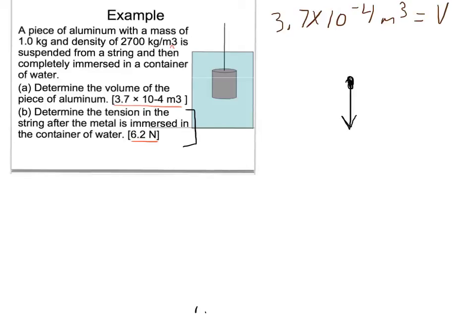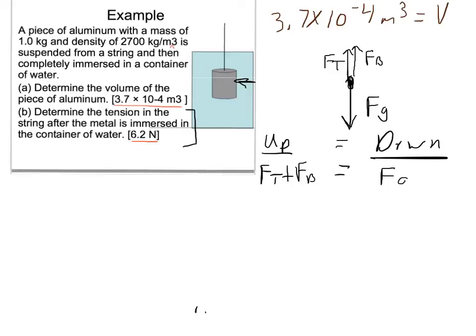So this object is probably on Earth, so we've got the weight. There's clearly a string, so we've got tension. And then because it's in a fluid, there is a buoyant force. The problem says, determine the tension after the metal is immersed in the container of water. Well, when it's in the water, it looks to me like it's just sitting there. And that would mean that my up forces equal my down forces, and there are no left-right forces. So I'd have Ft plus Fb, the buoyant force, equals the weight. Now, I can easily find its weight because the problem gave me the mass. I am looking for the tension, and so I need to know the buoyant force before I can find the tension.